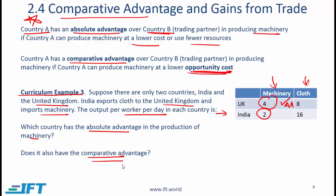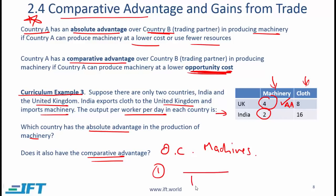What about comparative advantage? To understand comparative advantage we need to calculate opportunity cost, which will involve a simple division exercise — either 4 divided by 8 or 8 divided by 4. Many students get confused about what to do, so here is how to solve this. When looking at the opportunity cost for machines, remember two things: first, the cost should be for one unit of that thing, and here that thing is machines. So we are talking about the cost of one unit of machines in terms of cloth.